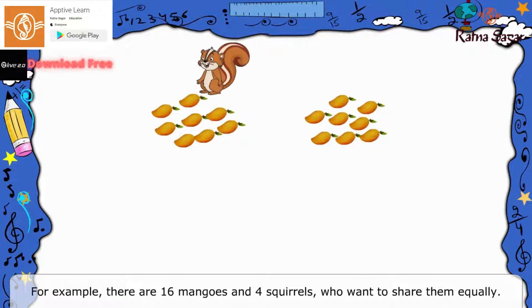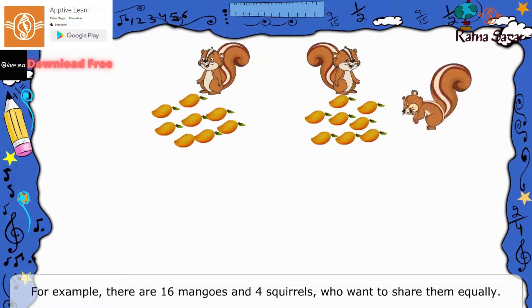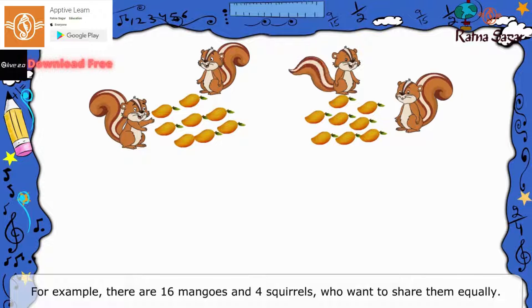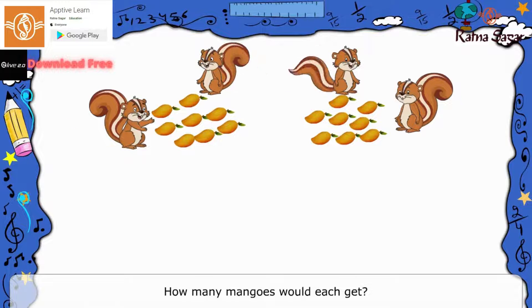For example, there are 16 mangoes and 4 squirrels who want to share them equally. How many mangoes would each get?